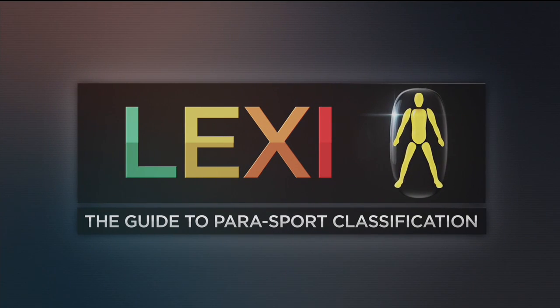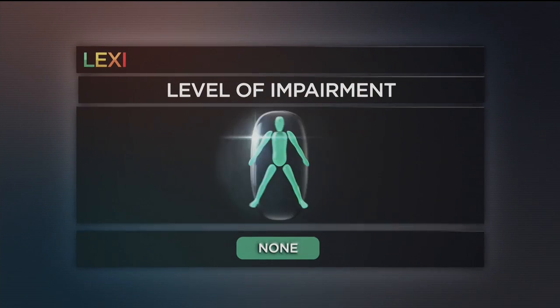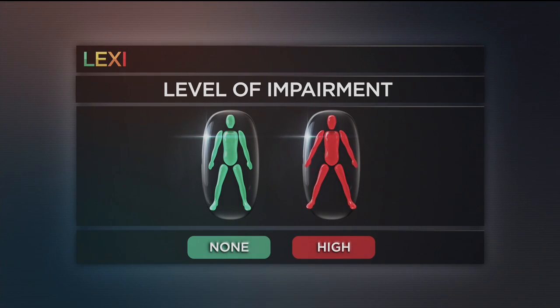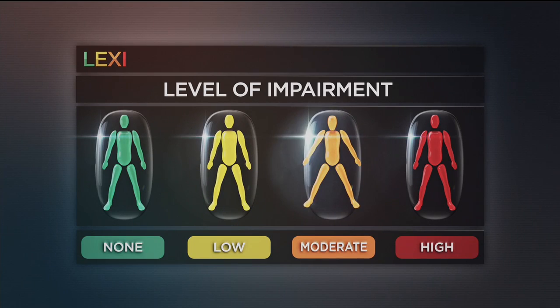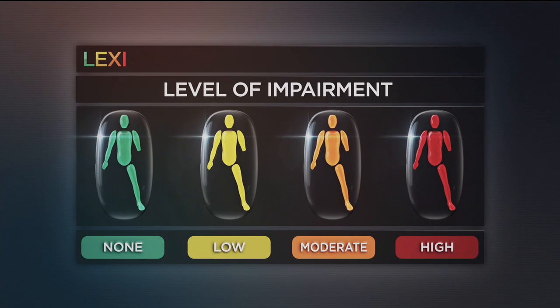Lexi is our on-screen guide to ParaSport classification. Lexi illustrates the different levels of impairment in each class by simply using four colours. Green indicates no impairment, red denotes a high degree of impairment, and in between, yellow for low and orange for moderate. Where you see a space, it represents a missing limb.